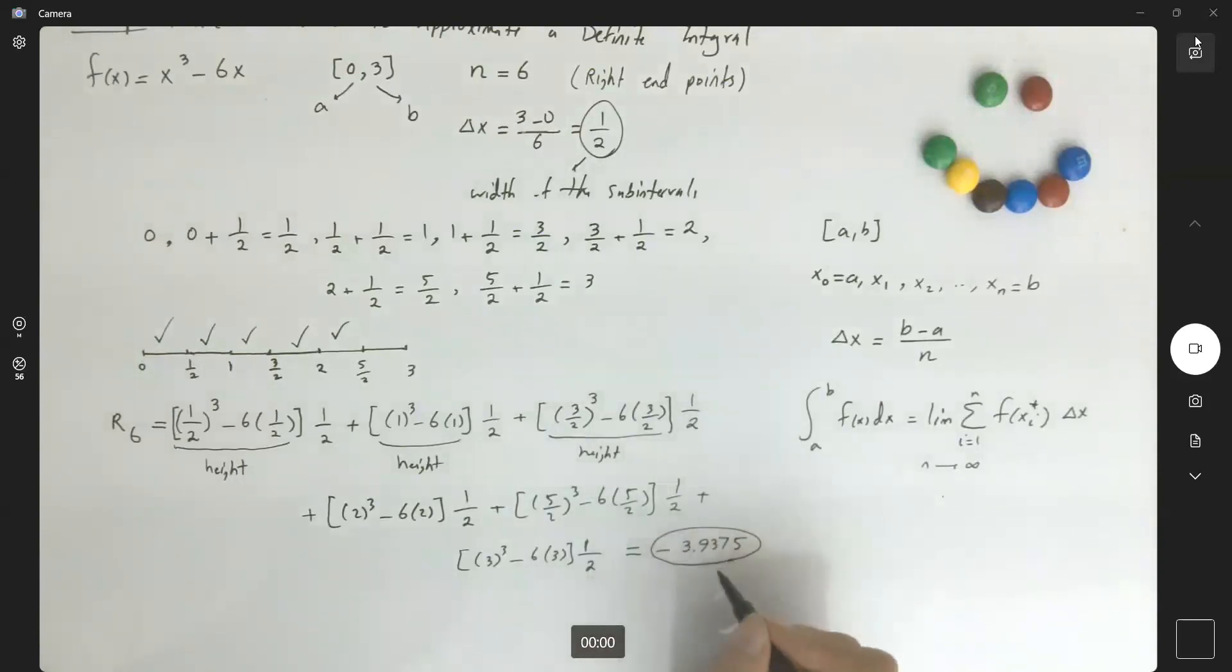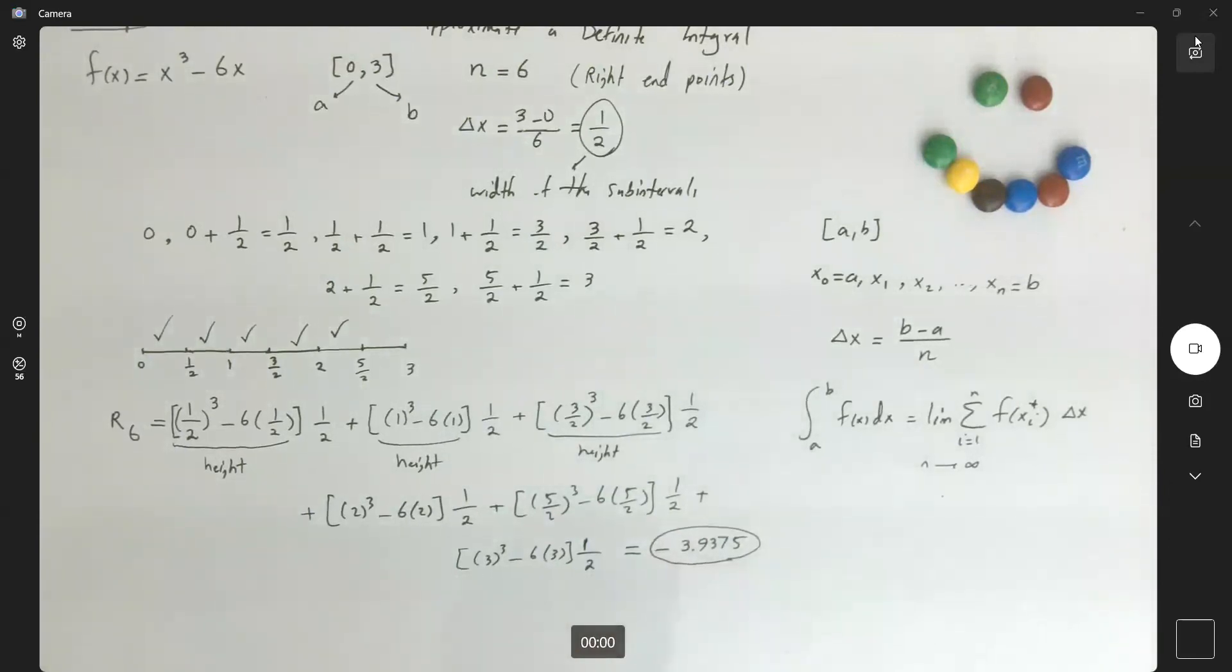Guys, note that it's a negative value. So this guy doesn't represent the area. It might be something differently, something else.